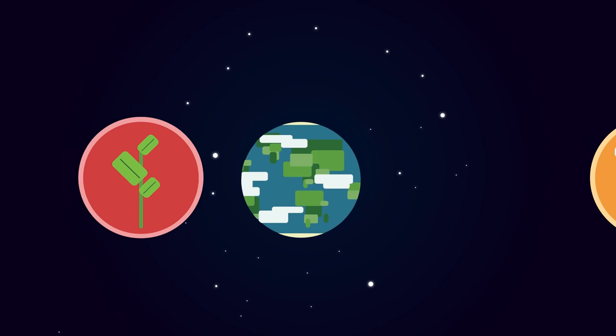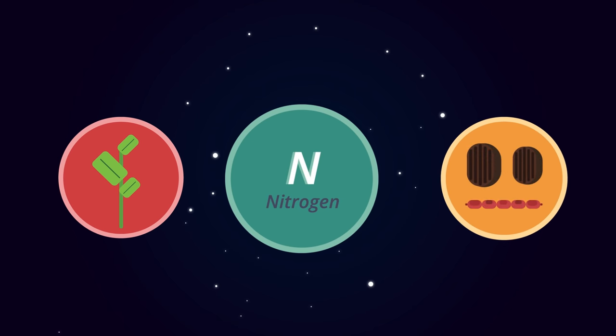Nitrogen is essential to life. Plants and animals need nitrogen to make proteins, and proteins are the building blocks of cells and all life.